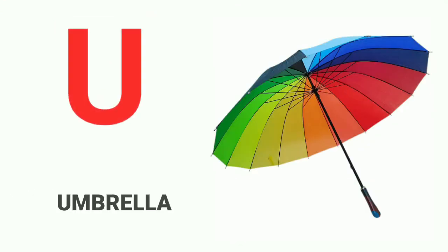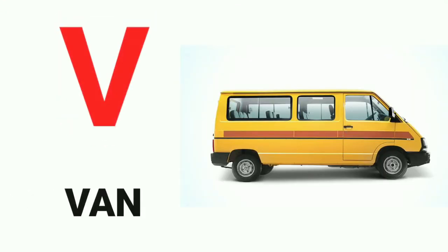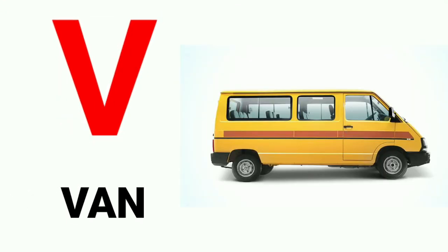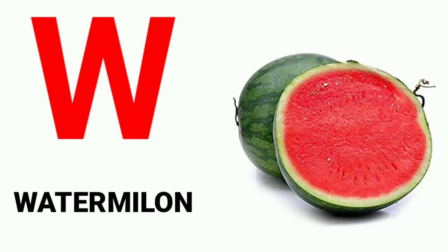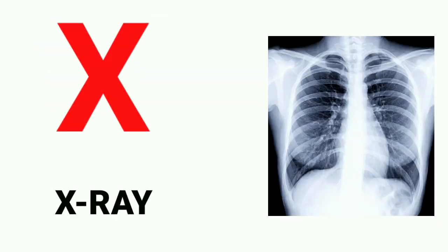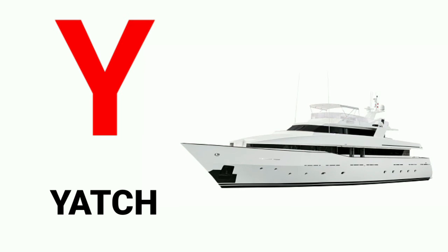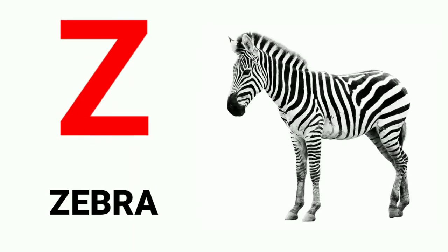S for sun, T for telephone, U for umbrella, V for pen, W for watermelon, X for x-ray, Y for yard, Z for zebra.